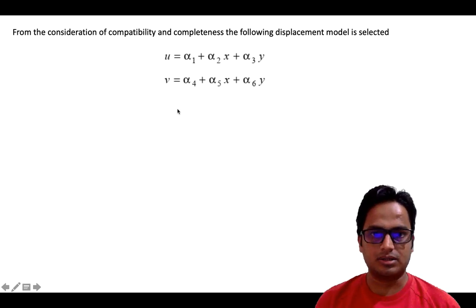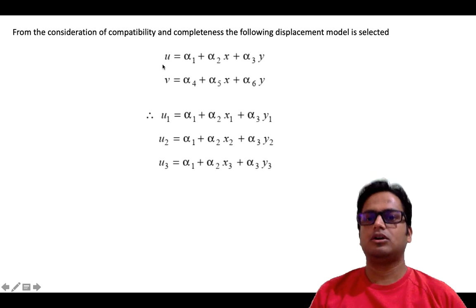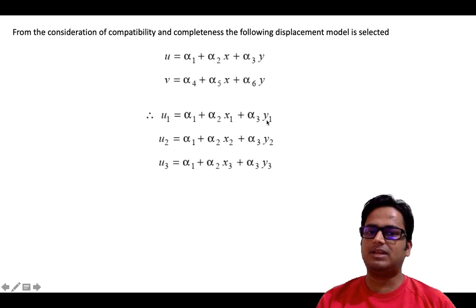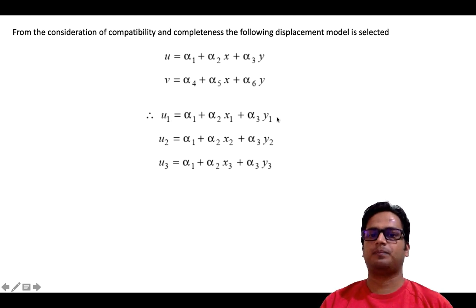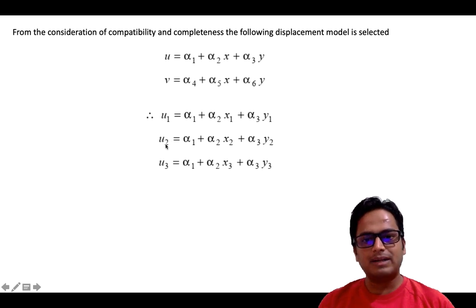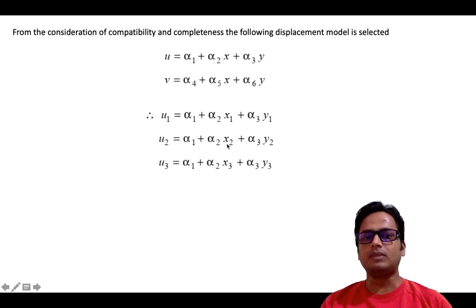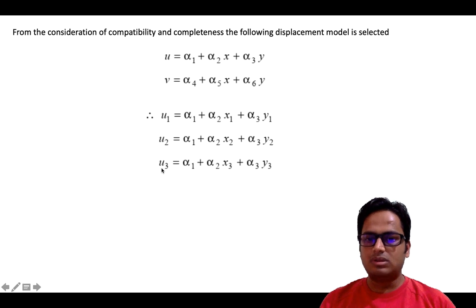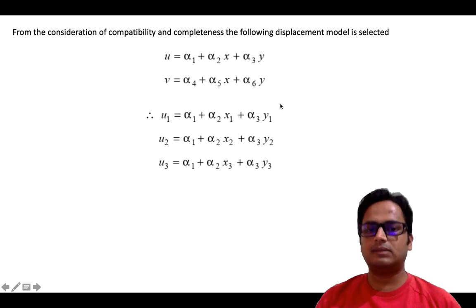Now we will apply the boundary conditions, which are the coordinate values for x and y at each node. For the first node, U1 equals alpha1 plus alpha2·x1 plus alpha3·y1. In the first equation we put U equal to U1 and replace x and y with x1 and y1. For node 2, the horizontal displacement is given by alpha1 plus alpha2·x2 plus alpha3·y2, with x and y replaced by x2 and y2. Similarly, displacement at node 3, U3, is given by the same expression with x3 and y3. These are the three equations.